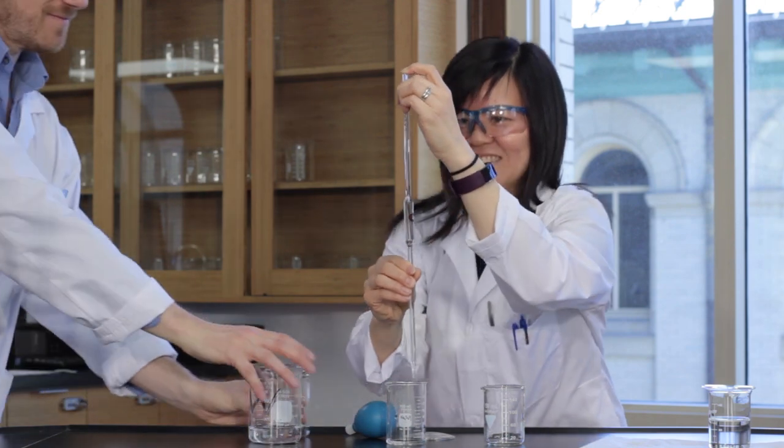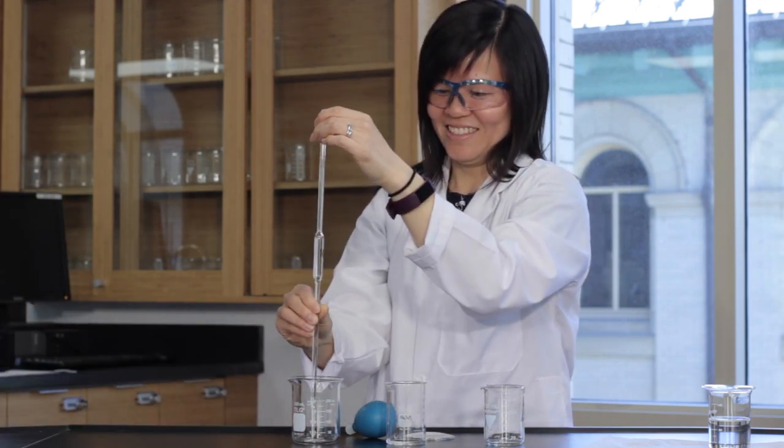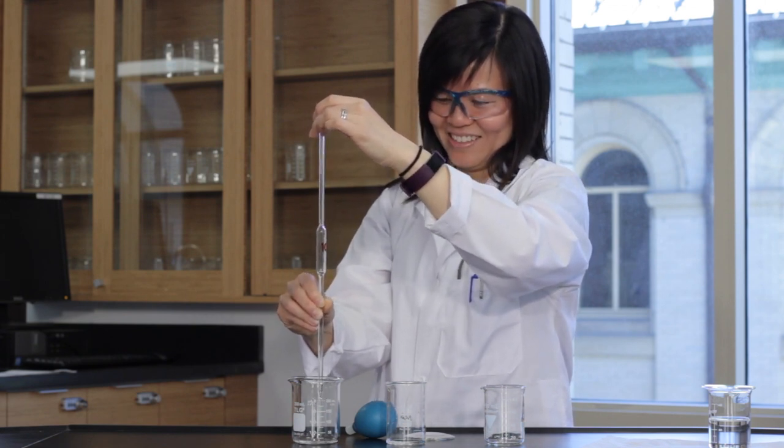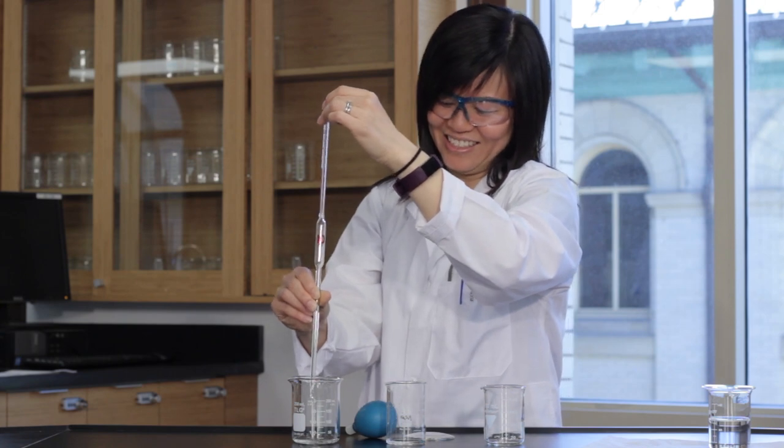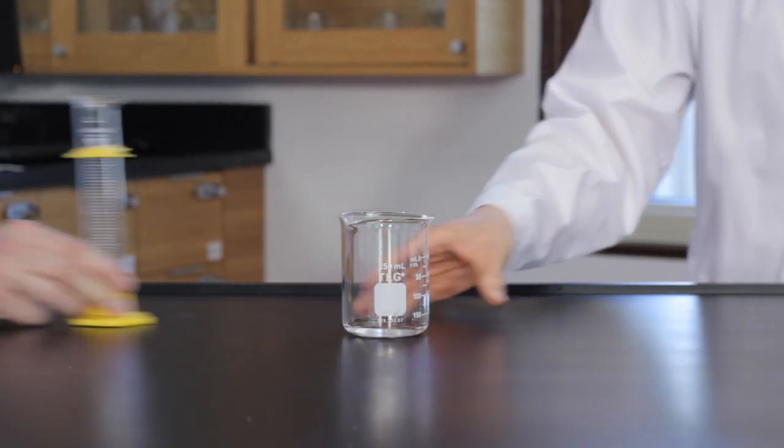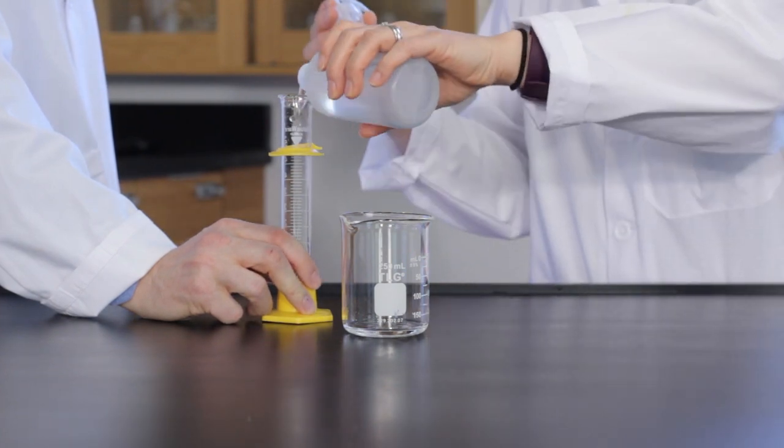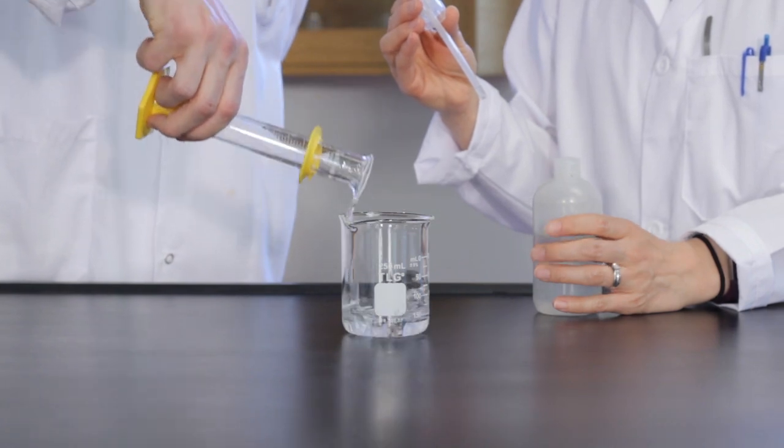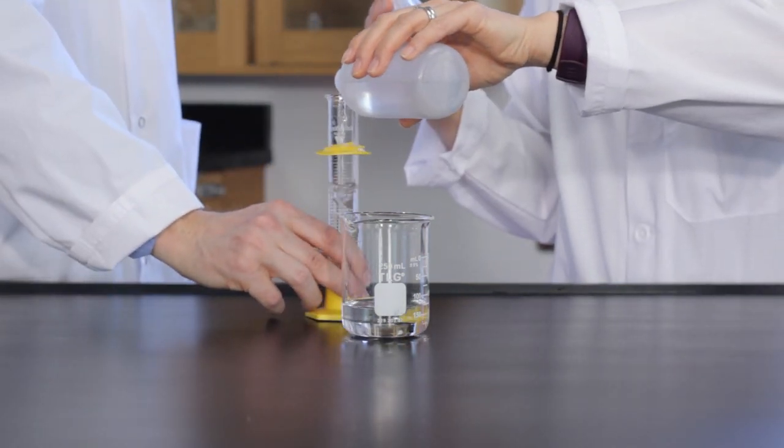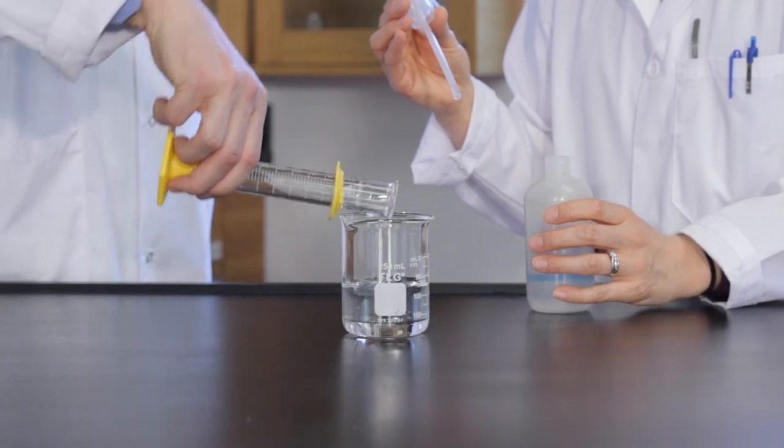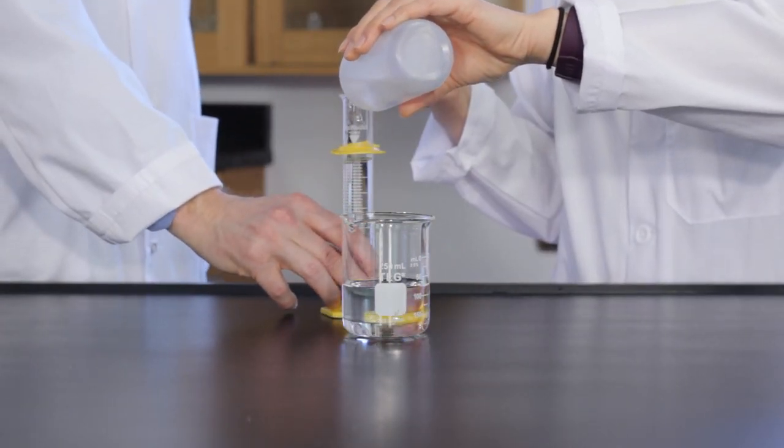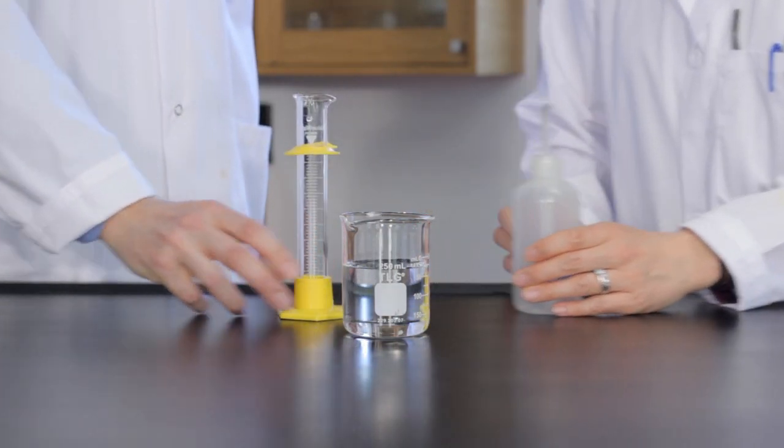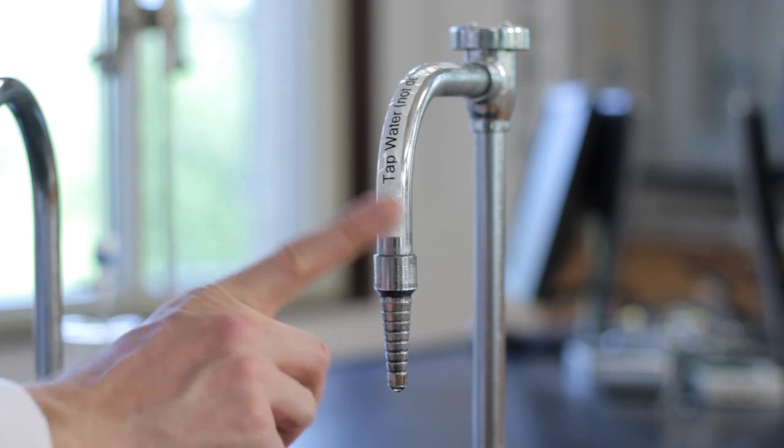Measure 10 milliliters of hydrochloric acid and transfer it into a clean 250 milliliter beaker. Add approximately 150 milliliters of distilled water to the beaker then set it aside. Be sure to use the appropriate tap.